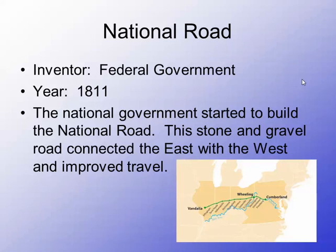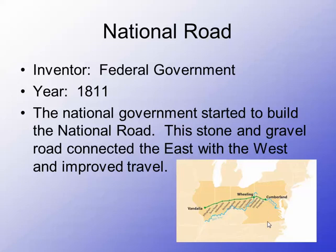Another invention to think about is our national road. It was our federal government that came up with this idea in 1811 and started to build it. It wasn't a paved road — nothing close to the interstates we think of today. It was made of stone and gravel, and basically it connected the developing east part of our country with parts of the west. As our country kept expanding westward, it had to be quicker and easier to travel that way — that's why Daniel Boone's wilderness road and this national road were so important for improving travel out west.